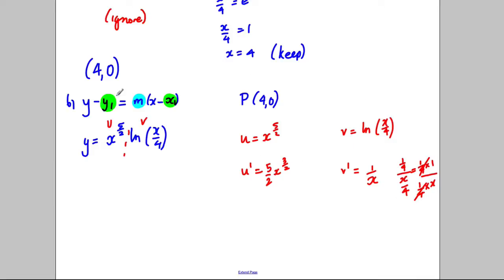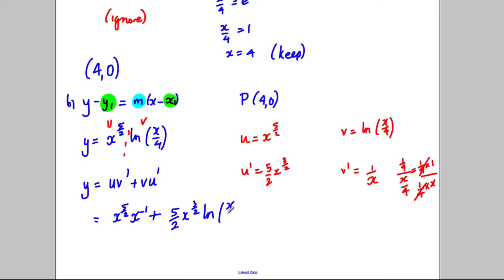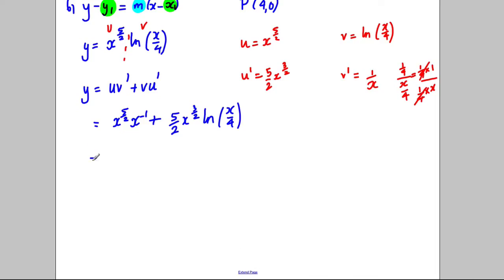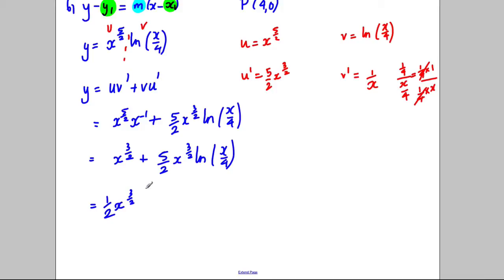Using the product rule, dy/dx equals u times v dashed plus v times u dashed. That's x to the 5 over 2 times 1 over x, plus 5 over 2 times x to the 3 over 2 times ln(x/4). Simplifying, x to the 5 over 2 times x to the negative 1 gives x to the 3 over 2. We can factorise out a half and x to the 3 over 2, leaving 2 plus 5 times ln(x/4), so dy/dx equals one half times x to the 3 over 2 times (2 plus 5 ln(x/4)).